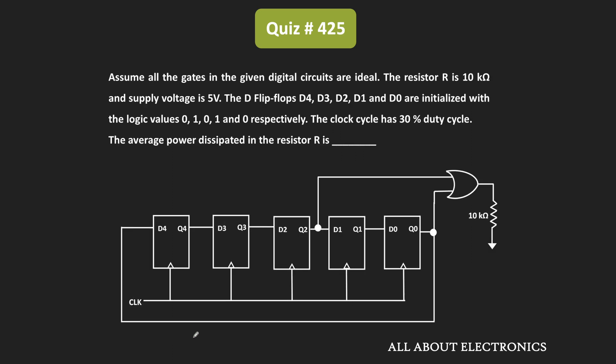Now let us move to the next example. We have been given a shift register with initial content 01010. The output of Q2 and Q0 is logically ORed and connected back to the register. We have been asked to find the average power dissipated across resistor R. All logic gates are ideal with no propagation delay, and the supply voltage is 5V. Logic 1 equals 5V and logic 0 equals 0V, meaning when the OR gate output is logic 1, it provides 5V across the 10kΩ resistor.